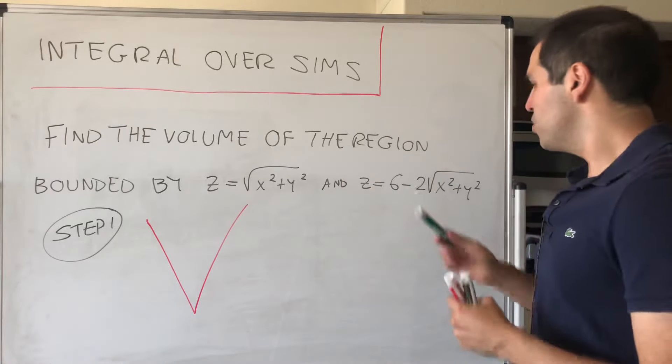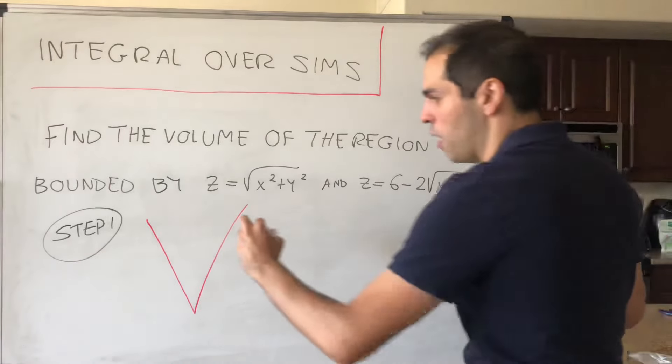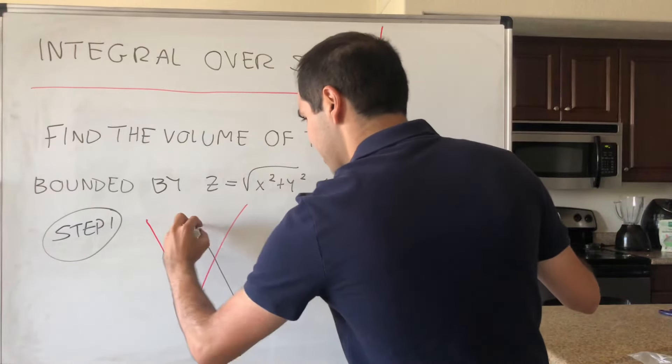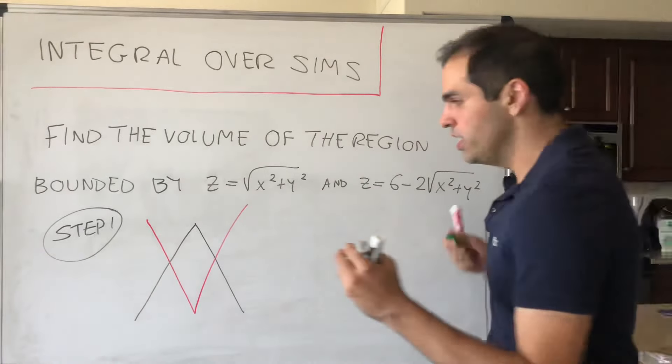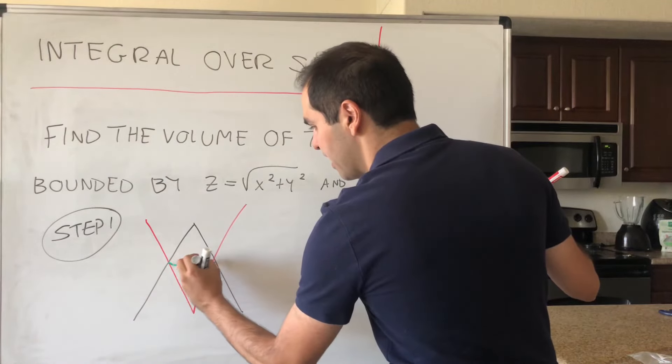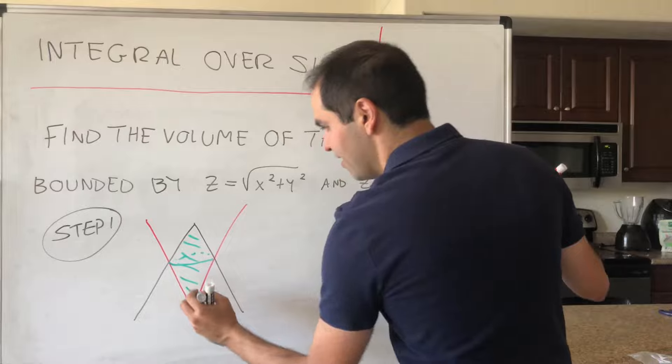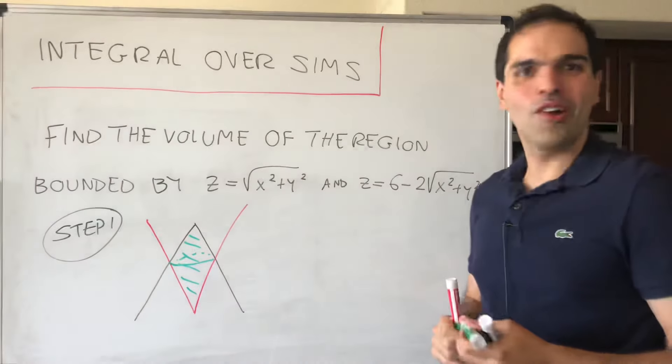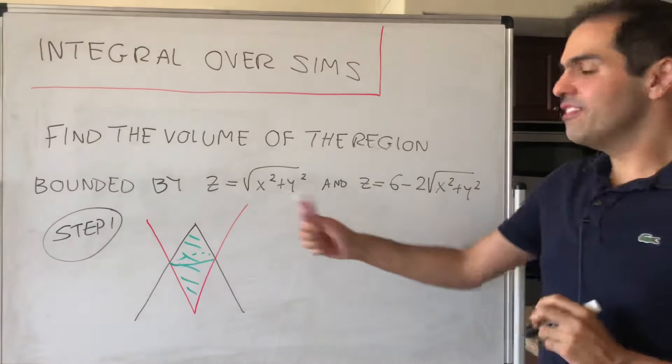On the other hand, z equals 6 minus 2 square root of x squared plus y squared. It's just an upside down cone, which looks like this. And in particular, we have to find a volume between the two, which looks, again, like the Sims figure, if you ever played that game. Or almost like Sauron, you know, my precious. All right. And now, so that was the first step.